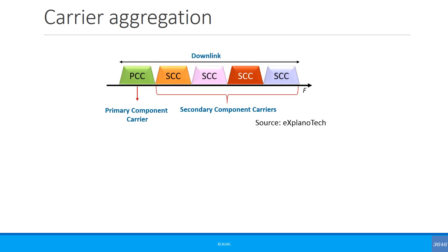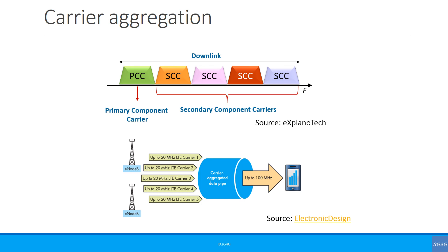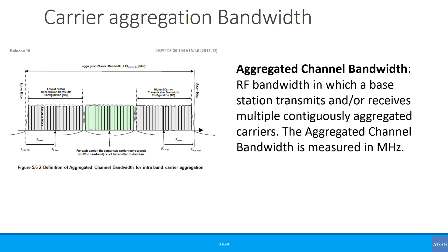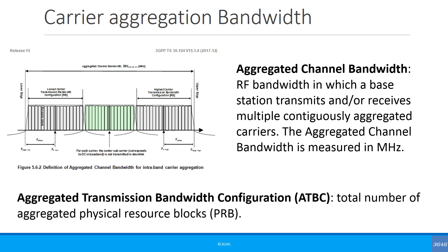In 3GPP Release 10, which was the first LTE-Advanced release, the concept of carrier aggregation was introduced. Here you can aggregate up to 4 additional carriers with the primary carrier, giving us the concept of primary and secondary component carriers. We can visualize this as smaller pipes combining to create a fatter pipe. Carrier aggregation introduces new bandwidth definitions: aggregated channel bandwidth is the RF bandwidth in which a base station transmits and/or receives multiple contiguously aggregated carriers, measured in MHz. The aggregated transmission bandwidth configuration is the total number of aggregated physical resource blocks.